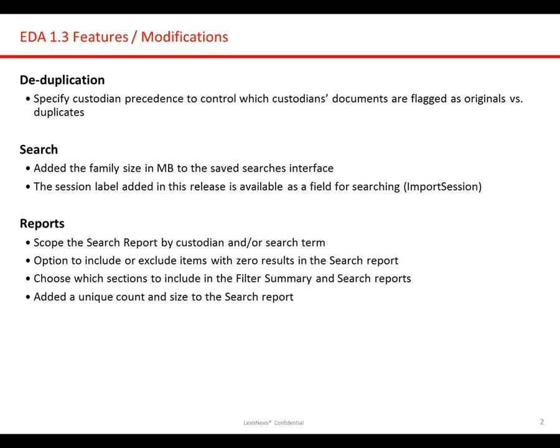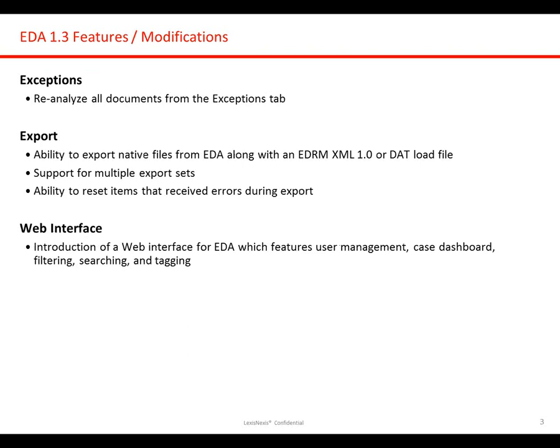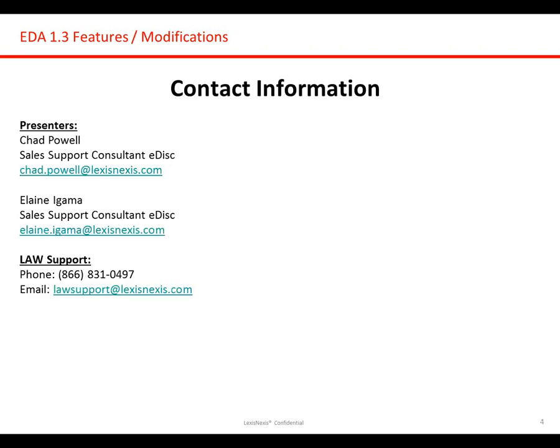For searching, we've added megabit size for the family — not just the file itself, but the family in general. Different session labels, some additional options within the reports so you can scope search reports down by custodian and search term. We added a unique count and size to the search report. The ability to reanalyze documents in the exceptions tab. We can export to any EDRM XML or a DAT load file in addition to going directly to Law PreDiscovery. You can also handle multiple export sets, saving different settings as profiles for the export. And we have a web interface aspect as well.